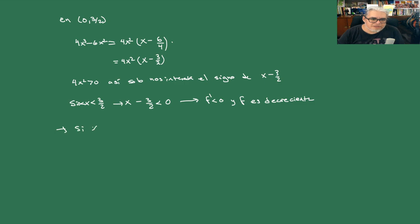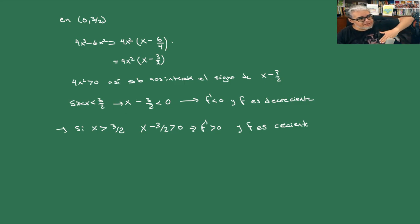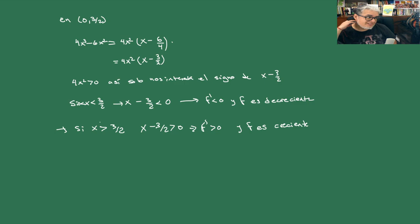Ahora si x es más grande que 3/2, usando lo mismo, x - 3/2 es positivo y 4x² es positivo, entonces f'(x) > 0 y f es creciente. Si se fijan, eso ya nos dice que antes de 3/2 la función viene decreciente y justo en 3/2 empieza a crecer, entonces x = 3/2 es un mínimo local.